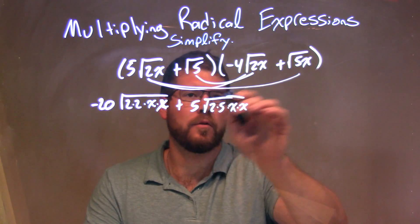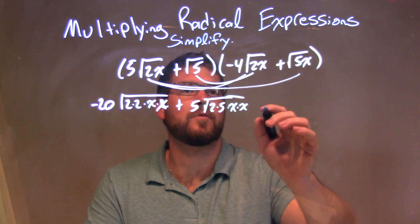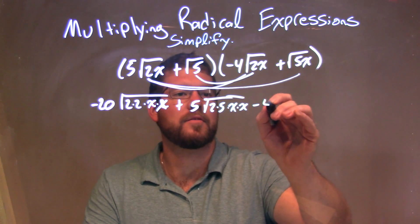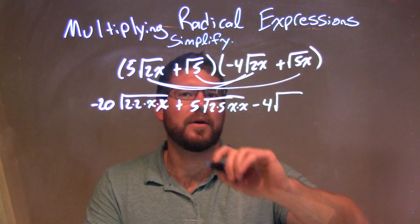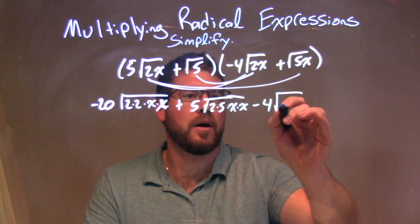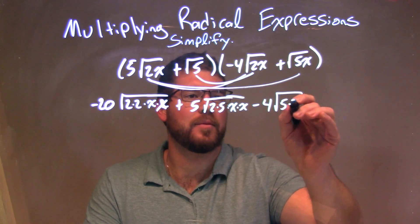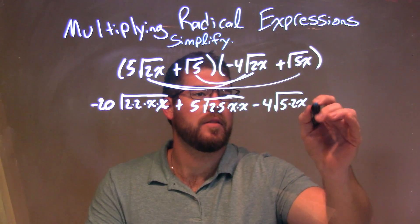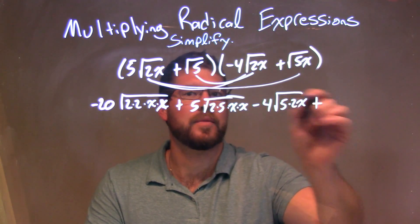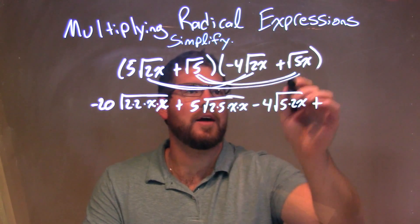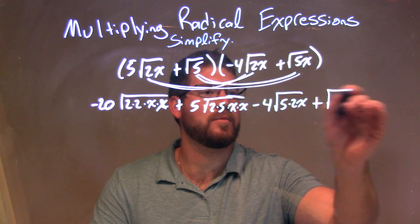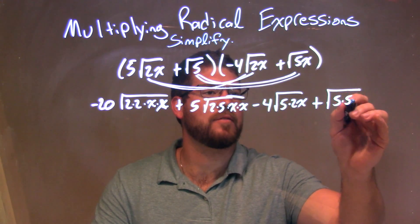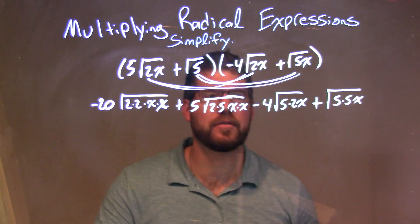The next part: the square root of 5 times minus 4 square root of 2x gives us minus 4 times the square root of 5 times 2x. Then lastly, the square root of 5 times the square root of 5x combines to be one big square root of 5 times 5 times x.